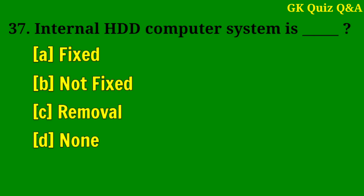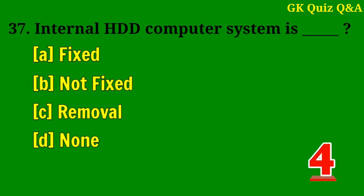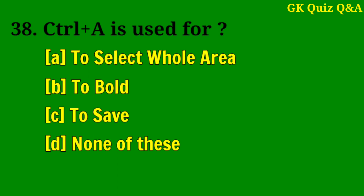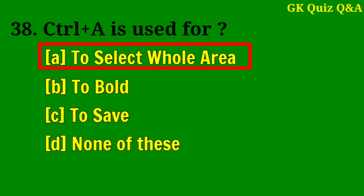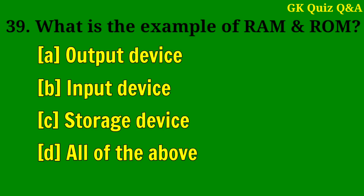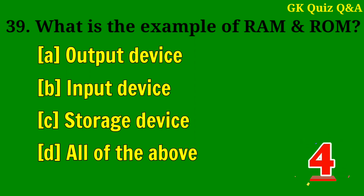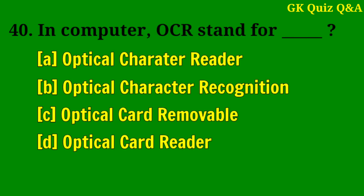An internal HDD computer system is — Answer A: Fixed. Ctrl+A is used for — Answer A: To select a whole area.